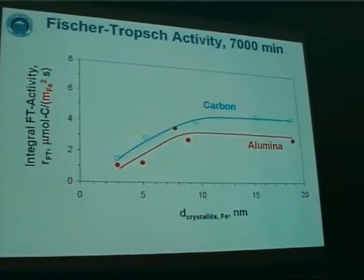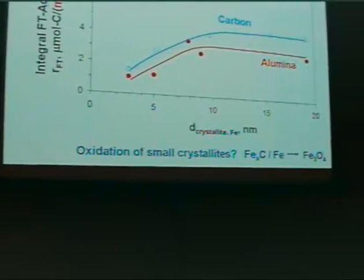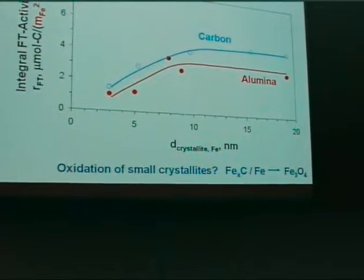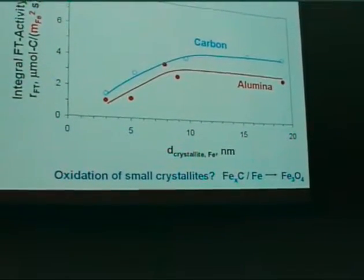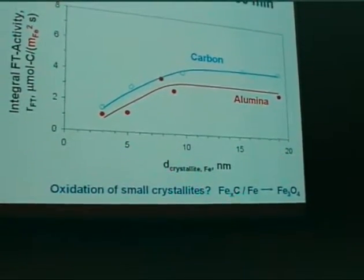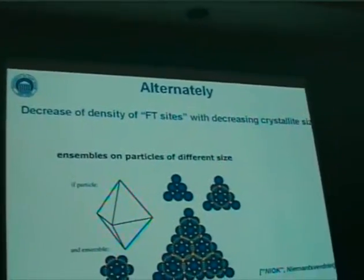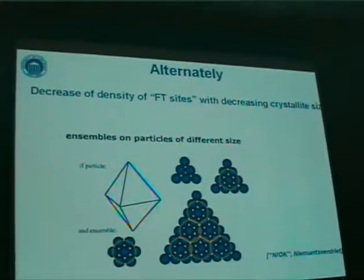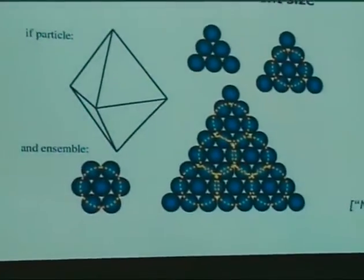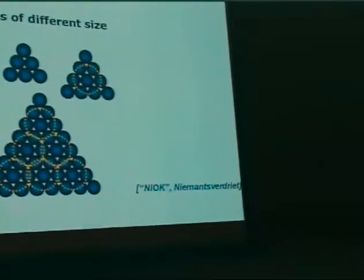We do not yet have a full explanation for this. What we propose — by analogy to what has been proposed in cobalt-based catalysis — is that small crystallites of the active phase, namely iron carbides, might transform into what is believed to be the non-active phase, magnetite. Alternatively, we think that an active site is not one atom only. We might deal with certain ensembles of atoms which are needed in order to get Fischer-Tropsch chain growth going.